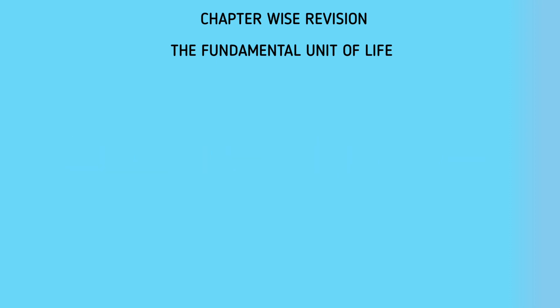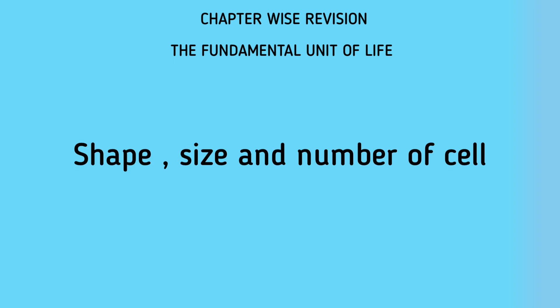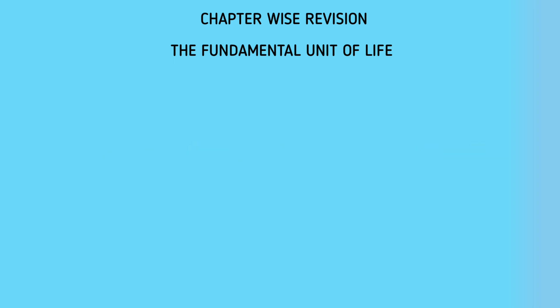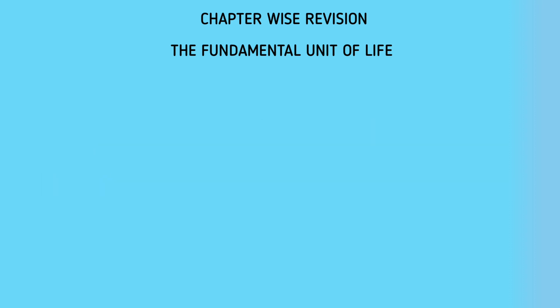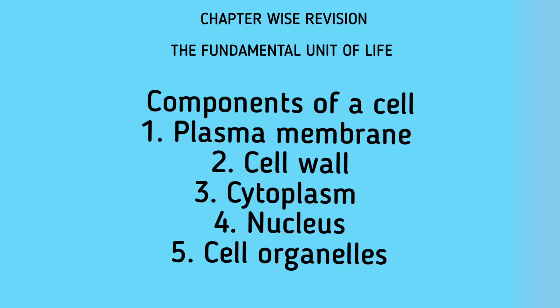We discussed about the shape, size, and number of cells. Based on the number of cells, organisms are classified into unicellular organisms and multicellular organisms, with many examples. Different shapes of cells exist in the human body and other organisms. We also studied about the size of the cell. The next point is components of a cell.